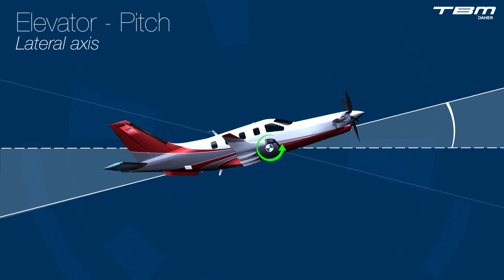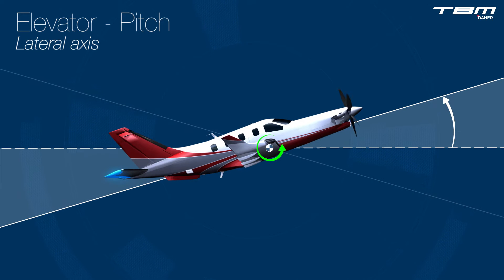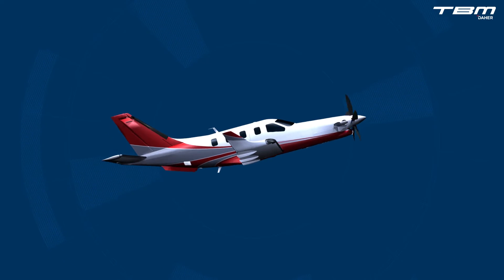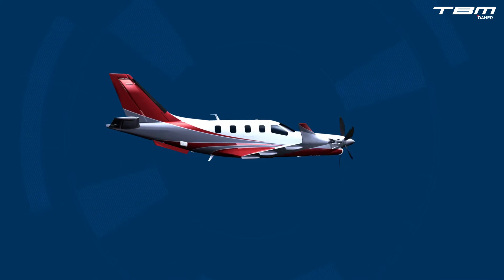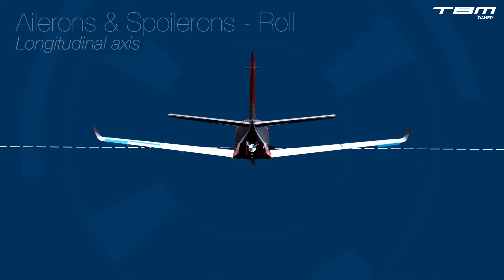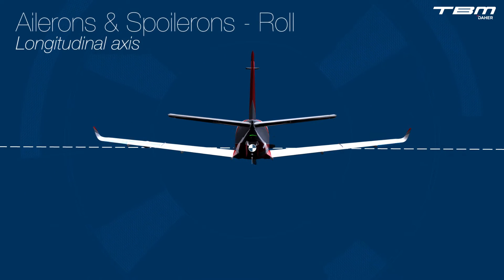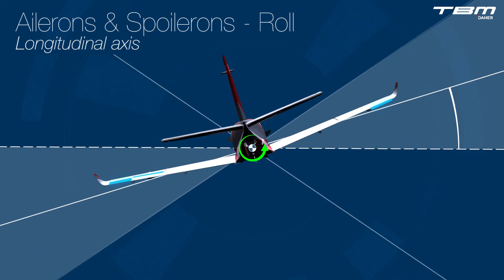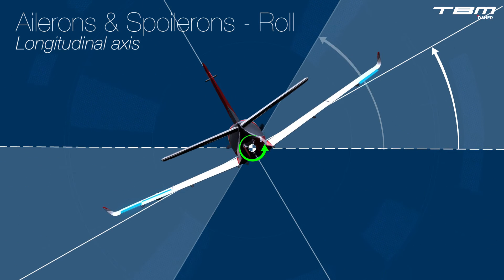The elevator pitches the airplane's nose up and down about the lateral axis. The TBM's ailerons roll the TBM about the longitudinal axes. Meanwhile, integrated spoilerons augment roll control by spoiling the lift on the descending wing and at the same time counteracting adverse yaw created by the lifting aileron.